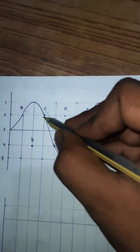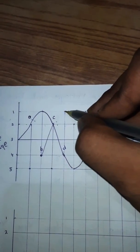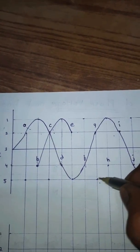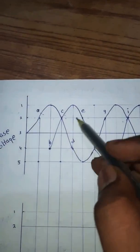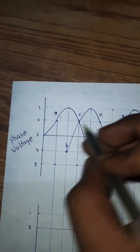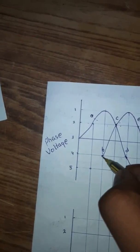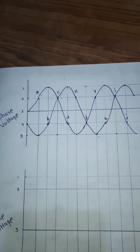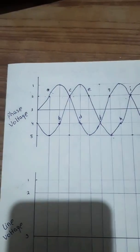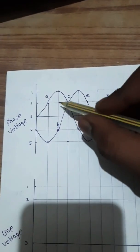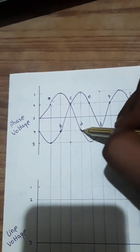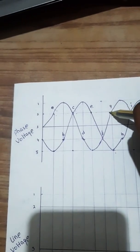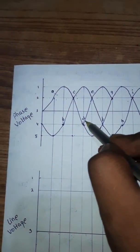The next step is to start from point b. Draw a line from point b to c, then from c to the next point, then to e, from e to f, and from f to the next point, and from that point to h, then h to i. After completing this, join these two points. Then join this point to the origin of the fourth line. You can observe that the waveform is taking its shape. For the next waveform, starting from d: connect d to e, from e to the next point, then to g.